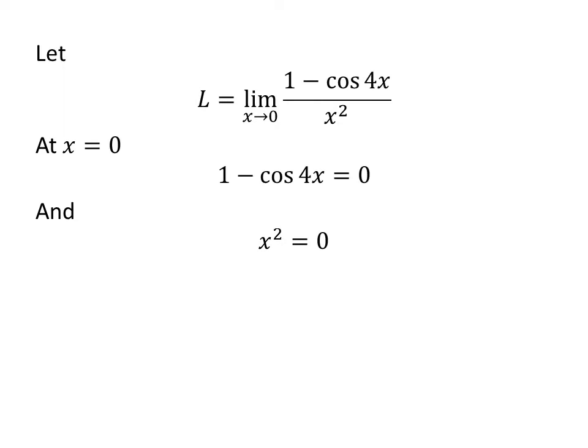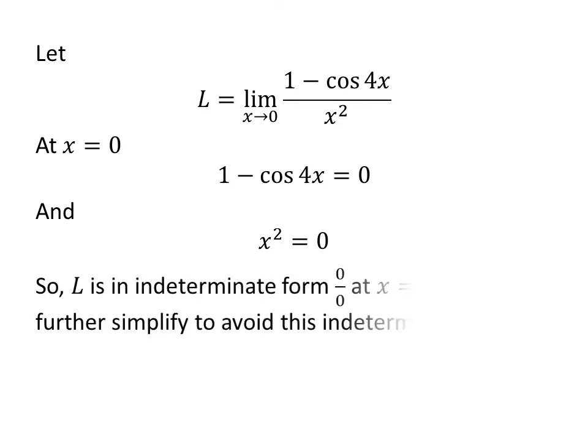At point x is equal to 0, the numerator 1 minus cosine of 4 times x is equal to 0 and the denominator square of x is equal to 0. As L is in indeterminate form 0 upon 0 at point x is equal to 0, to avoid this indeterminate form, let us further simplify the limit.